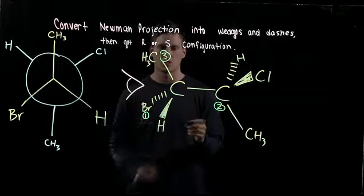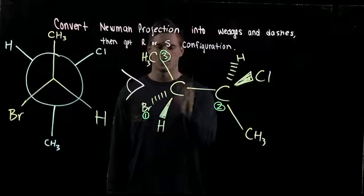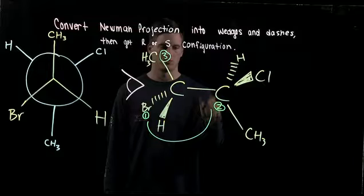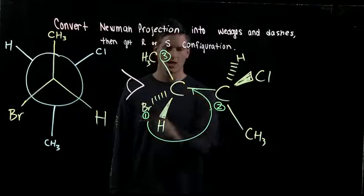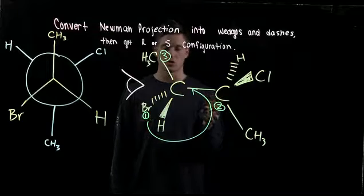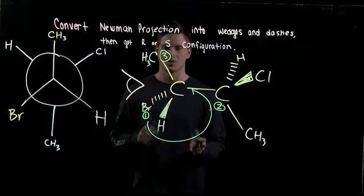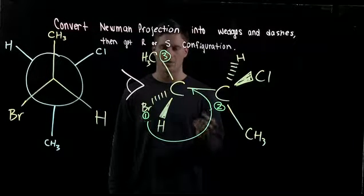So when we're going to R and S this, we're going to want to draw a circle from one, two to three. So in this example, when we draw it in, this is going to be going in the counterclockwise position. So usually this would be an S. If you want to do the steering wheel example, this would be a left-hand turn. That's an S.